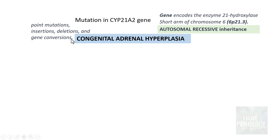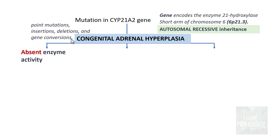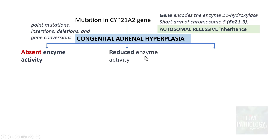Depending upon the type and severity of the mutation, congenital adrenal hyperplasia is categorized into three types: first, complete absence of enzyme activity; second, reduced enzyme activity; and third, a much milder form with very partial deficiency.